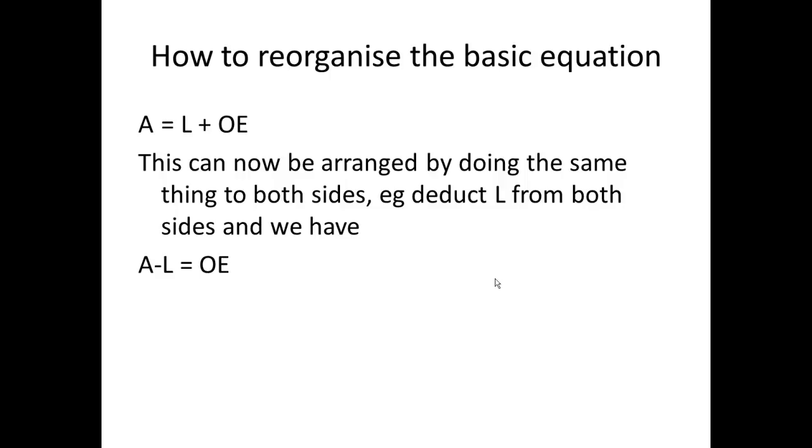The first thing we can do with the accounting equation is reorganize it. Assets equals liabilities plus owner's equity. But we could rearrange this by doing the same thing to both sides. For instance, we could deduct liabilities from each side. And so then we'd have, instead of liabilities plus owner's equity, we would just have owner's equity because we've deducted liabilities. And then we would have assets minus liabilities because we've deducted liabilities from that side.